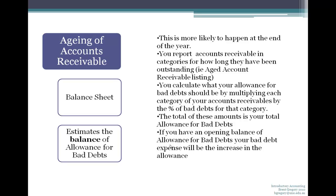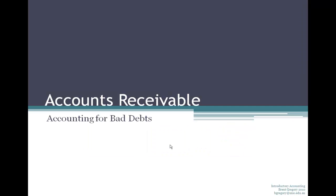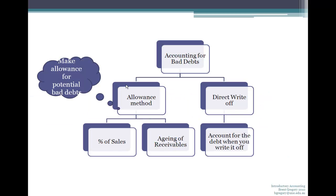If you have an opening balance of bad debts, your bad debt expense is just the increase in this allowance. So to summarise: when accounting for bad debts, you can either wait until you write the item off and account for it directly, or you can make an allowance — either based on a percentage of your credit sales, or by looking at the money owed and making an allocation based on that.